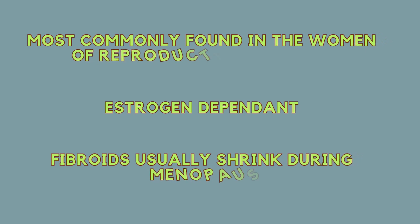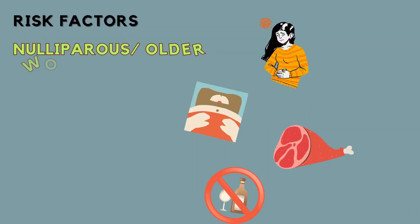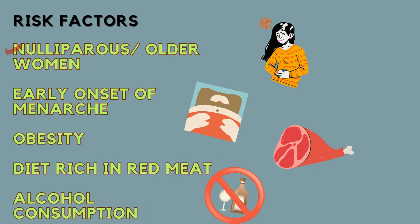Uterine fibroids are most commonly found in women of reproductive age group. The reason is that fibroids are estrogen dependent for their growth; hence we can see fibroids shrinking in women who have attained menopause. Risk factors include older nulliparous women — those who have never been pregnant — and women with a history of early onset of menarche. Other risk factors include obesity, a diet rich in red meat, a diet poor in fibers, and alcohol consumption.